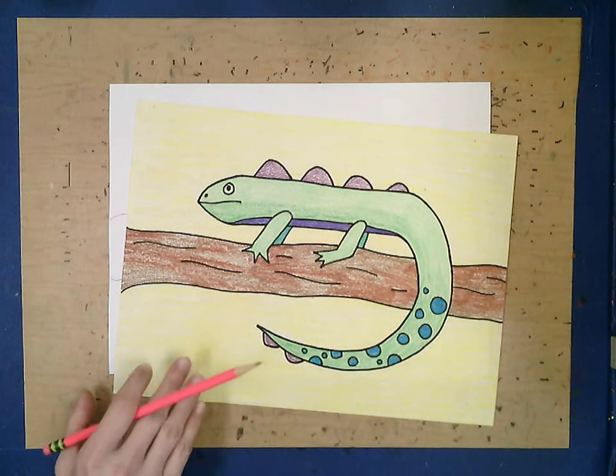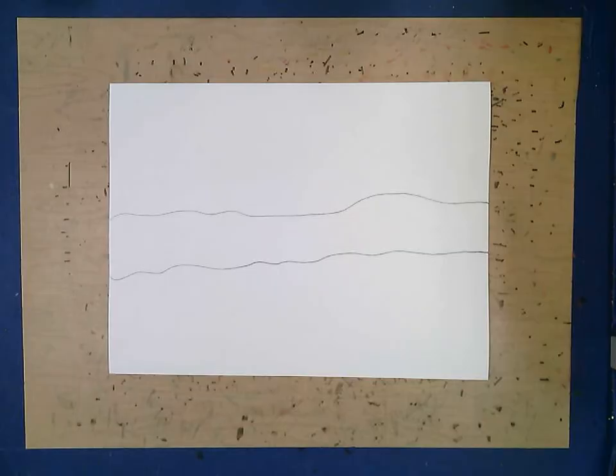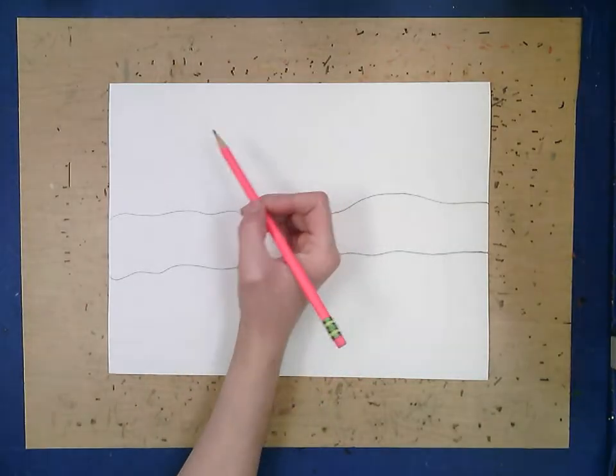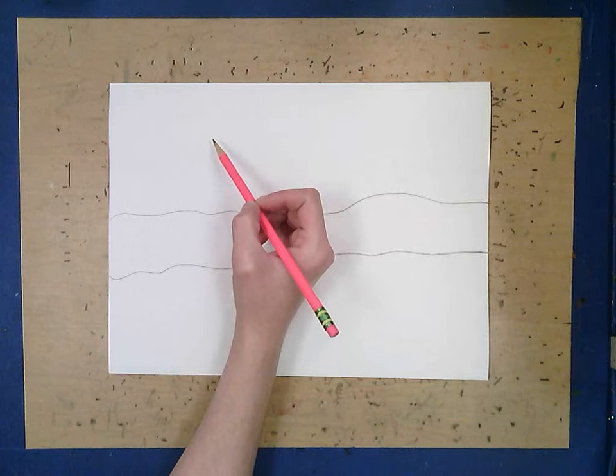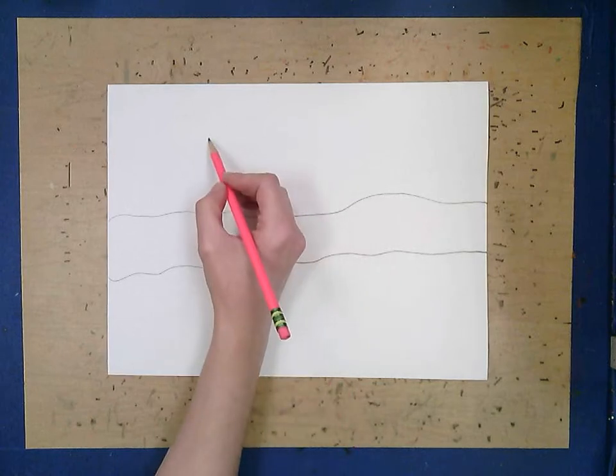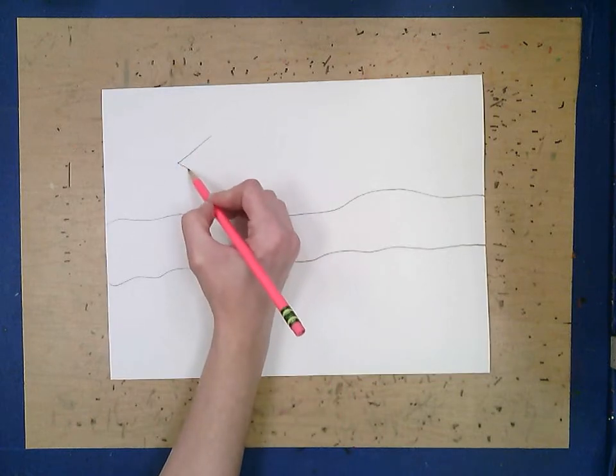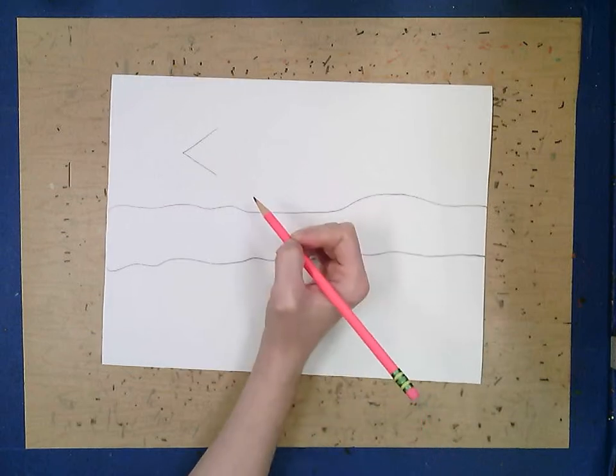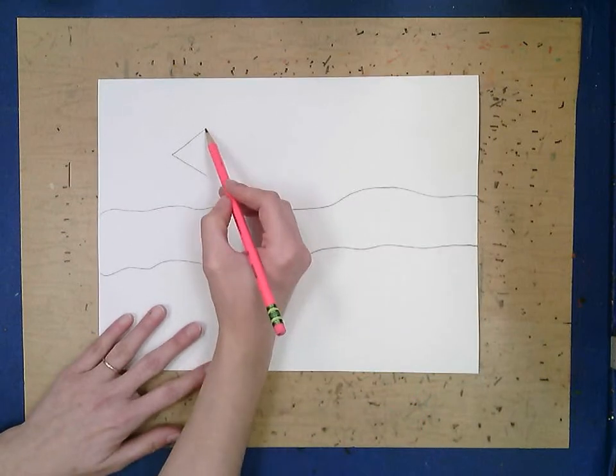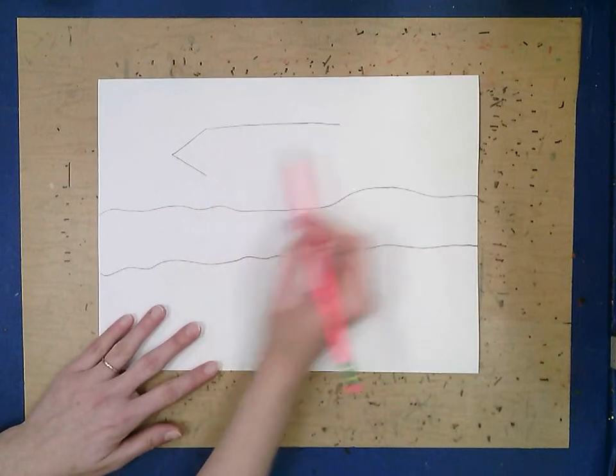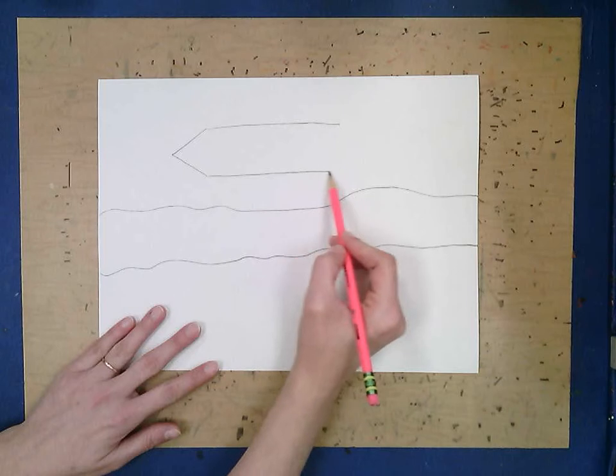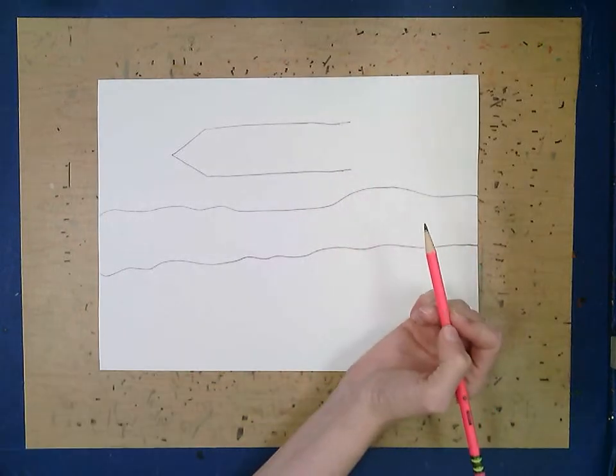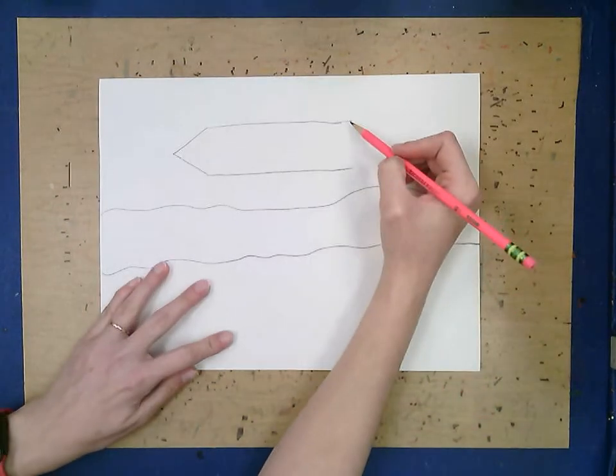If I draw lightly it'll be easier for me to erase. Now we're going to make the body. Very simple to start, we're going to start with just an arrow for the head and then two lines, nice and light, for the body.